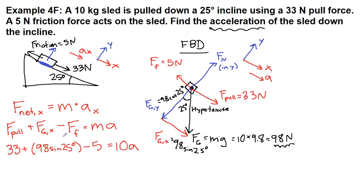69.4 Newtons equals 10A. If we divide both sides by 10, then we get that A is 6.94 meters per second squared. And that is our final answer.